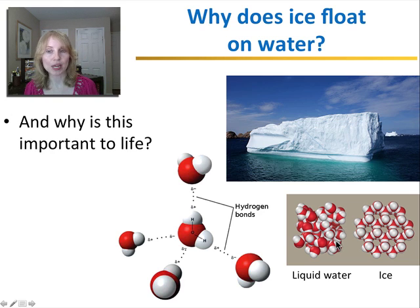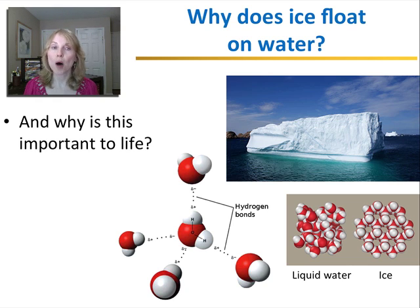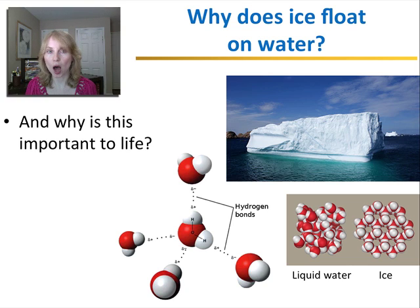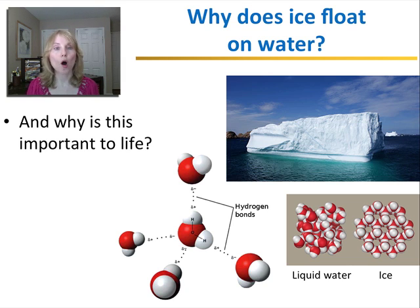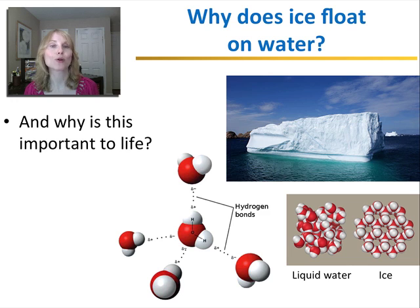Why is this property important to life? Imagine it's winter and a pond begins to freeze over. Ice will form as a thin sheet on top of the pond. Because it's above the liquid water, it actually insulates the liquid from the freezing temperature of the air. So the water under the ice will be a little warmer, and that allows aquatic organisms like fish to survive the winter.